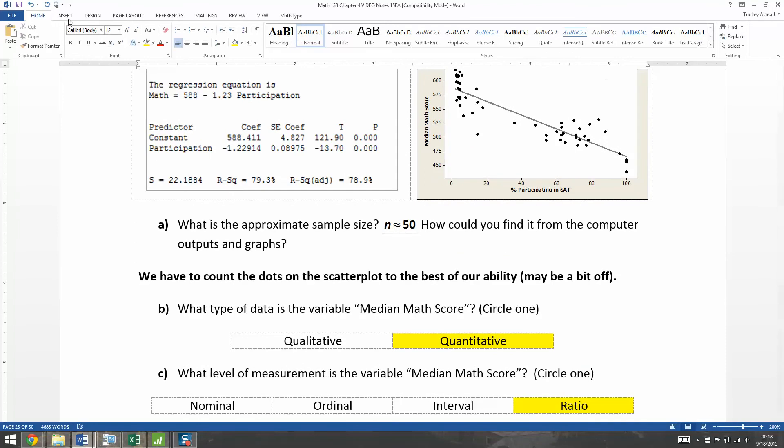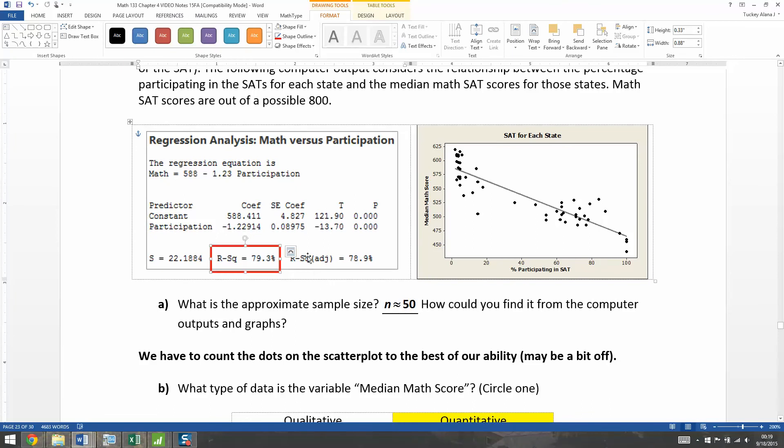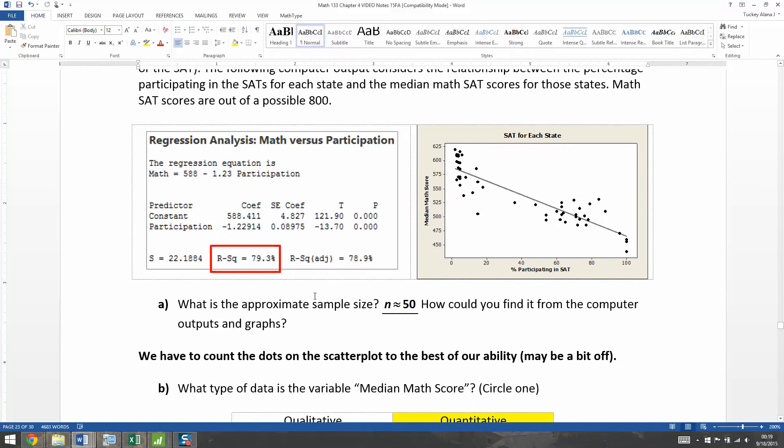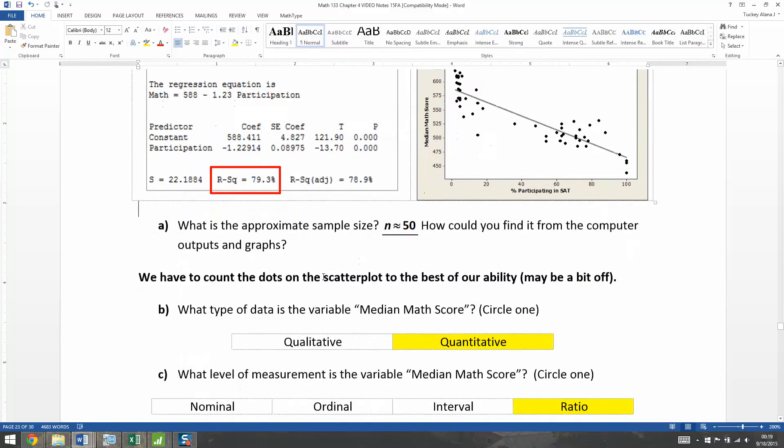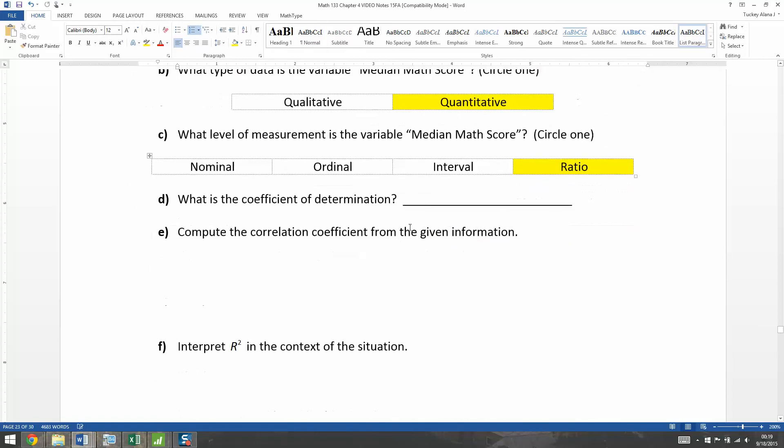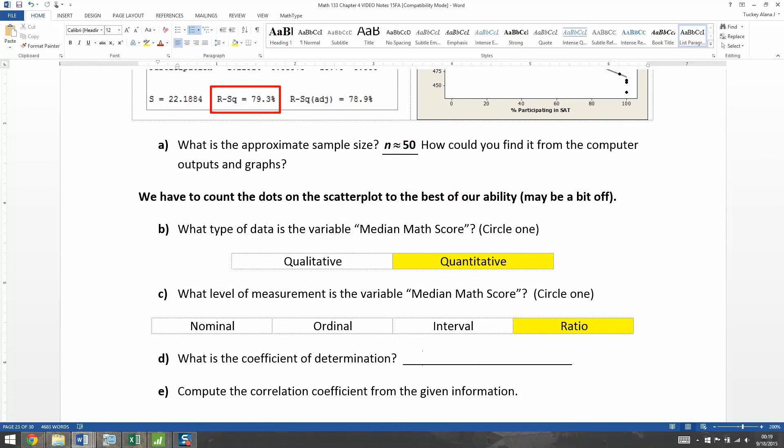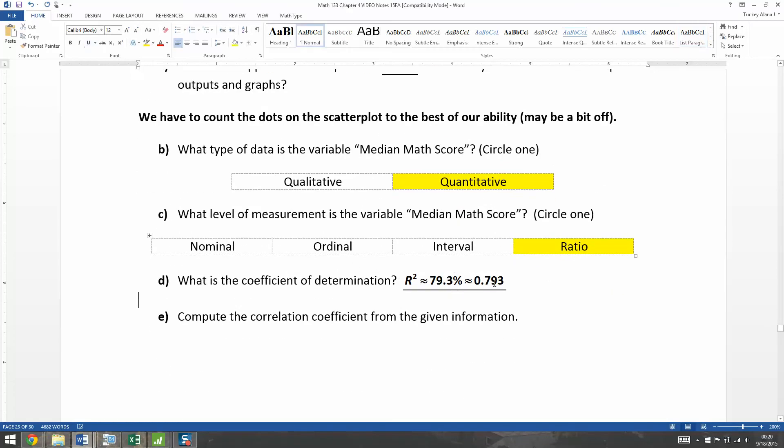All right, now the coefficient of determination, that is the R-squared is 79.3% that you see right there. So that's the coefficient of determination, it's given to you in the output. Just ignore the R-squared adjusted. The adjusted one, it means that they've adjusted the data set to get rid of outliers and some other stuff. So we're not going to ever use that one. We're only going to ever use the regular R-squared. That's the one we're interested in. So for us, it would be 0.793 or 79.3%. And there, that's typed up. So that's the R-squared.